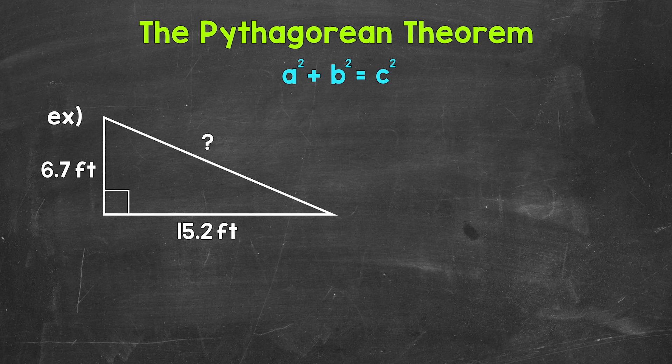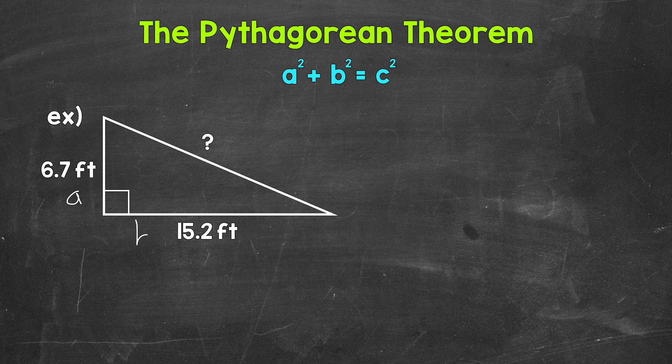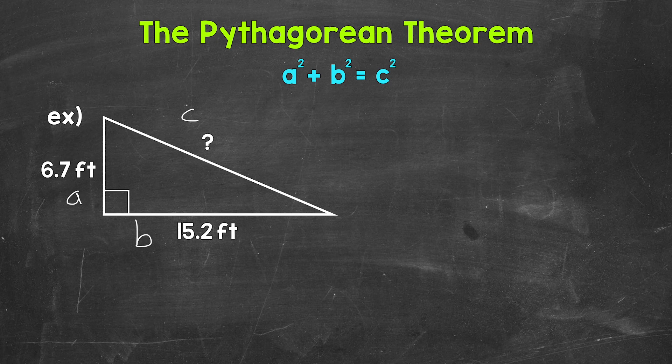Let's jump into our example where we have a right triangle and the lengths of the legs are given, so we need to find the length of the hypotenuse. Let's call this leg a and this leg b, and then the hypotenuse is always c.